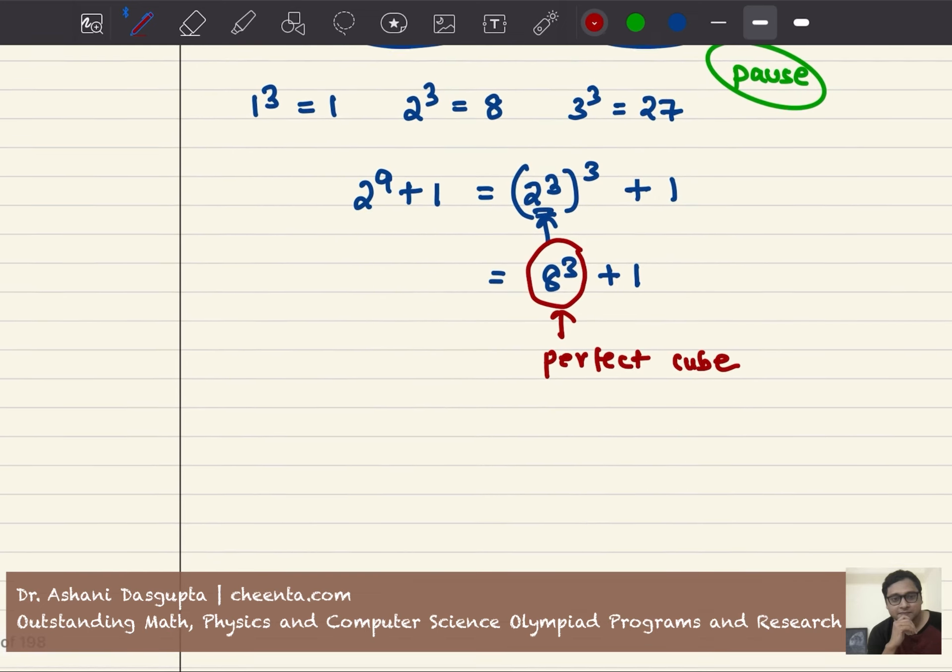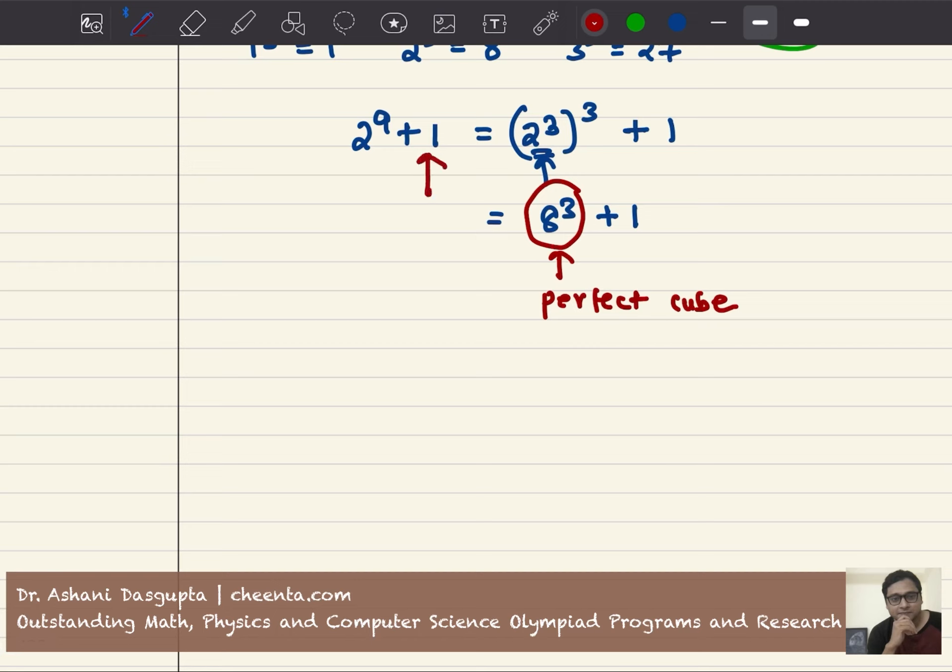8 cubed is a perfect cube, so we start with one more than a perfect cube. What is the perfect cube that comes after 8 cubed? After 8 cubed comes 9 cubed. That's the only perfect cube that comes exactly after 8 cubed. We can write 8 cubed plus 2, 8 cubed plus 3, and so on, and at some point we will reach 9 cubed, then 10 cubed, 11 cubed, and so on.